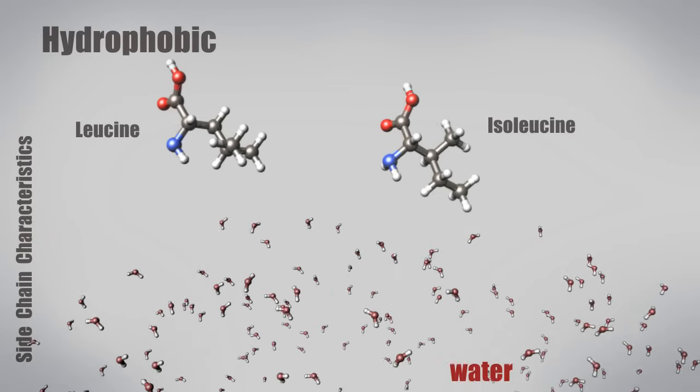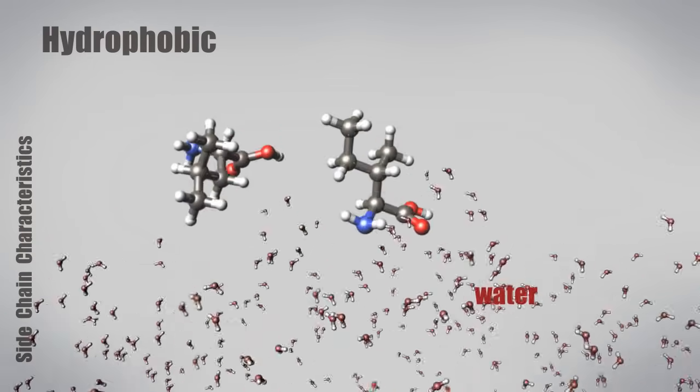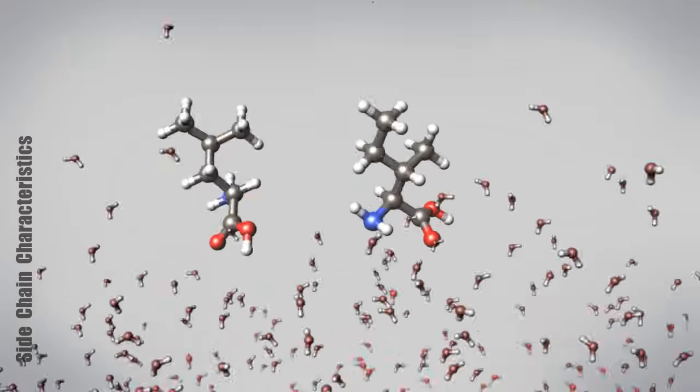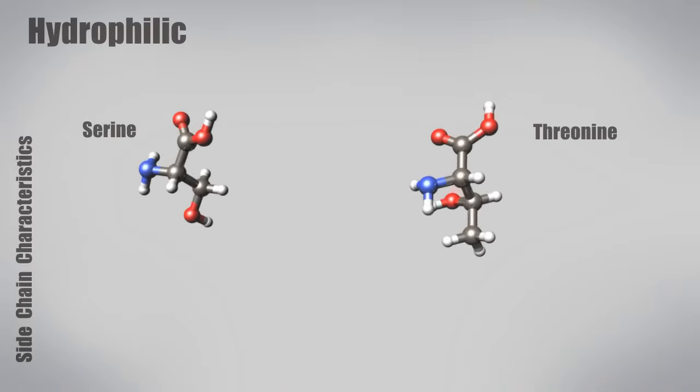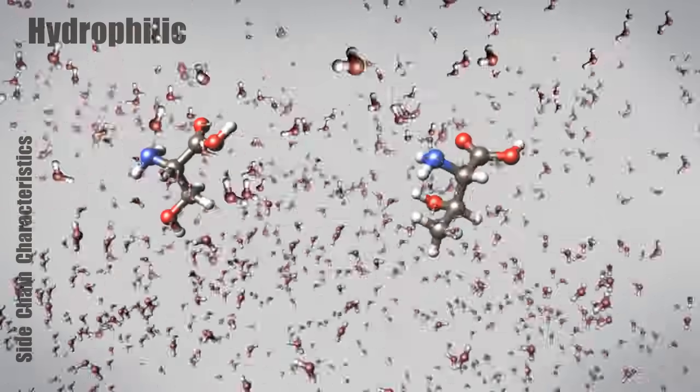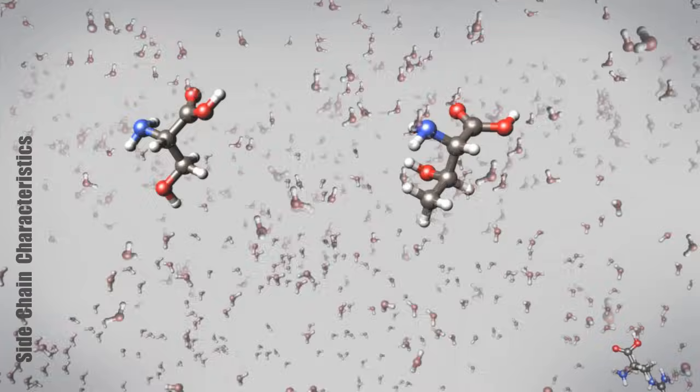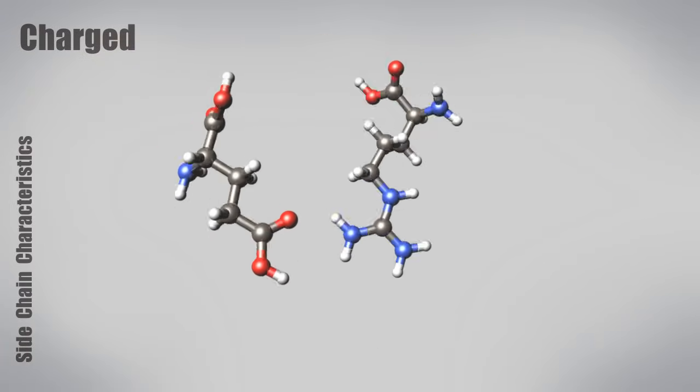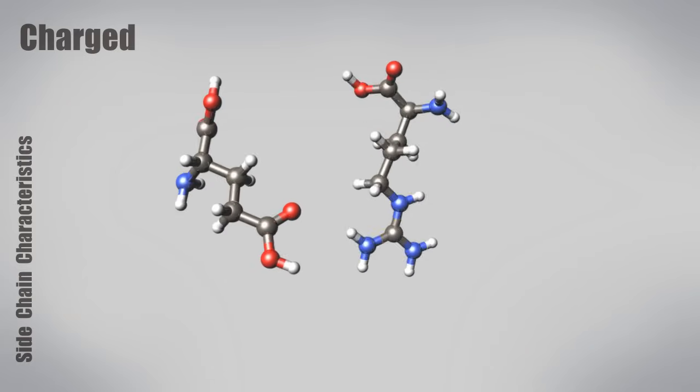Hydrophobic amino acids such as leucine and isoleucine have carbon-rich side chains which don't interact well with water. Hydrophilic amino acids such as serine or threonine interact well with water. Charged amino acids like glutamic acid or arginine interact with oppositely charged amino acids or with water.